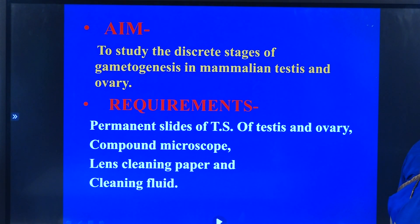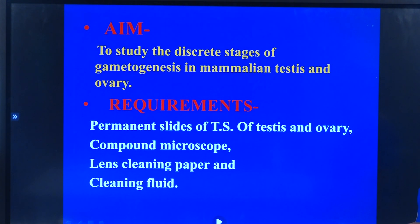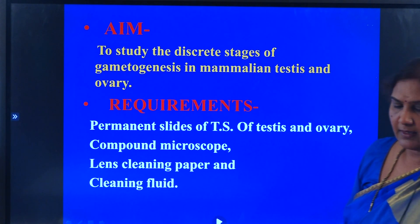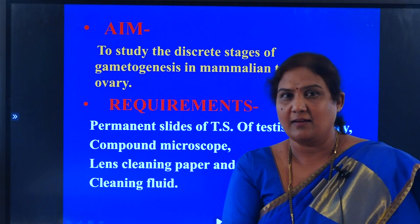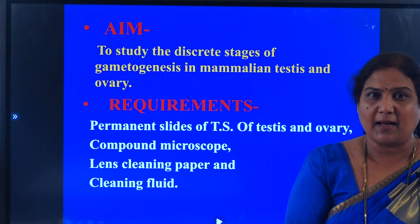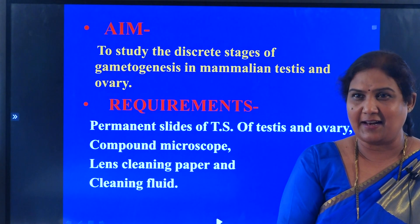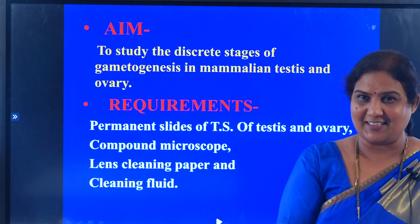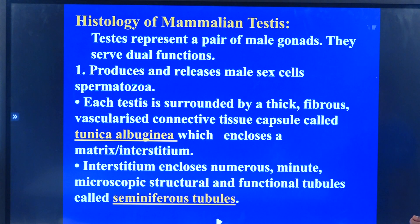The aim of the study is to study the discrete stages of gametogenesis in mammalian testes and ovary. For this, the requirements are the permanent slides — permanent slides of testes and ovary, the transverse section of them — then a compound microscope, lens cleaning fluid, and lens cleaning paper. This part of the work will be done by the most important people for the biology practicals: that's team one, Mr. Ganesh and Mr. Nagaraj, and the lecturers.